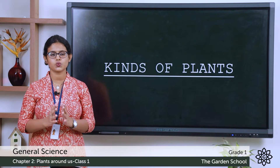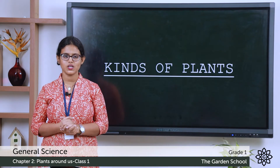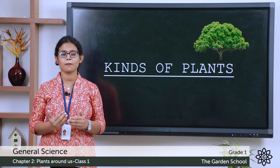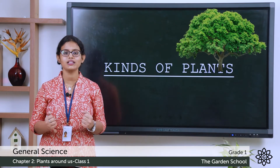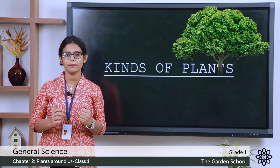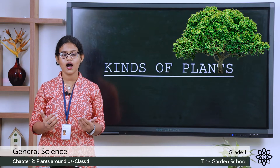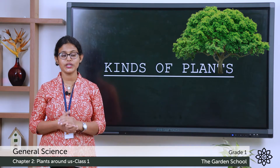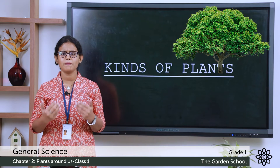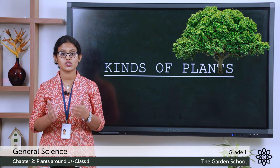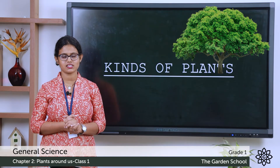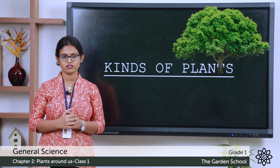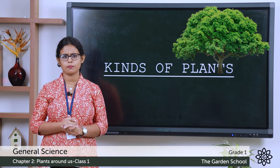Today we'll discuss about the different kinds of plants. The first one is big plants. Plants which are big and strong we call them as big plants, and some are tall. Trees are big plants. You can see many trees around you. Trees are big and strong and they have a thick stem.